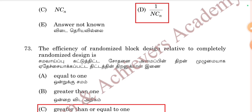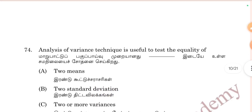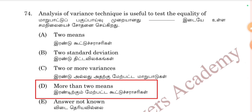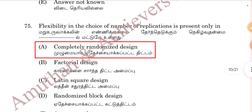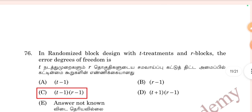The efficiency of randomized block design relative to completely randomized design is greater than or equal to one — that is the correct answer. Analysis of variance technique is useful to test the equality of two or more means — Option D is correct. The flexibility in the choice of number of replications is present only in completely randomized design — Option E. In a randomized block design with t treatments and r blocks, the error degrees of freedom is t-minus-1 times r-minus-1 — Option C is correct.